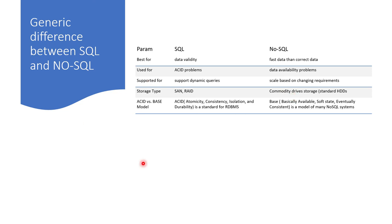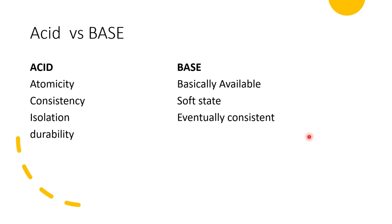There is something called the ACID versus BASE model. Relational SQL databases support the ACID model — Atomicity, Consistency, Isolation, and Durability. NoSQL follows the BASE model — Basically Available, Soft state, Eventually Consistent. In simple terms, if you want more accuracy and data availability, go with SQL. If you want high availability over strict consistency, go with NoSQL.